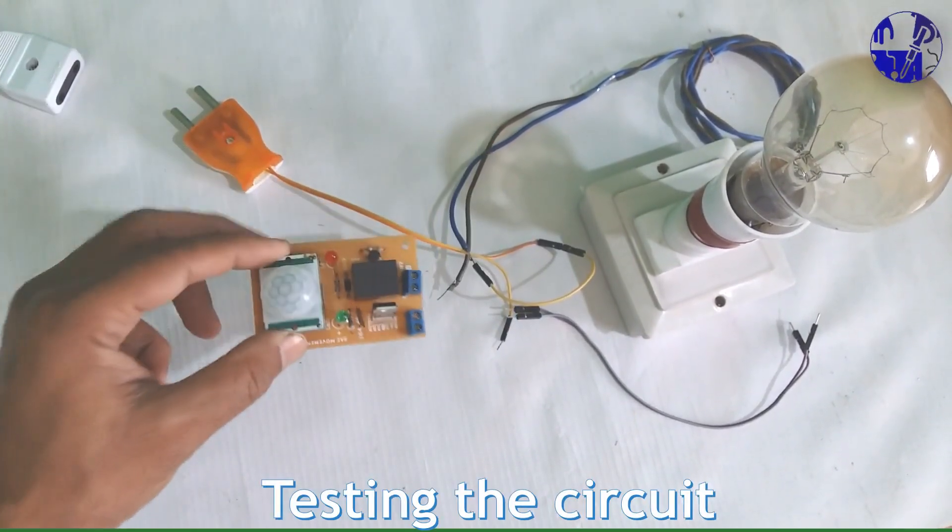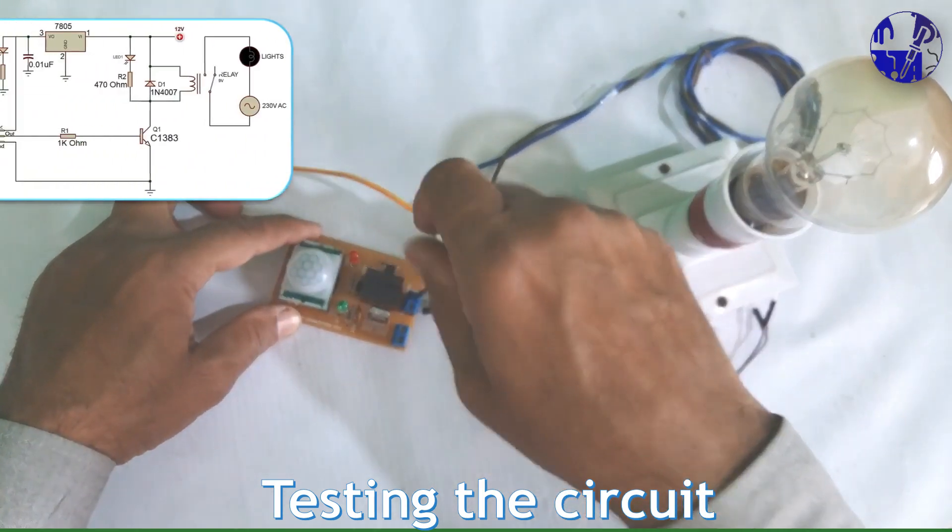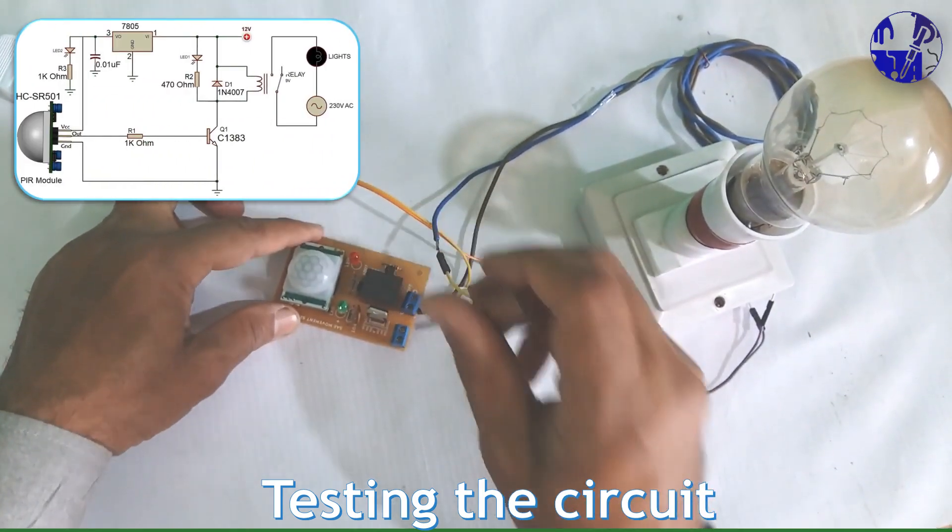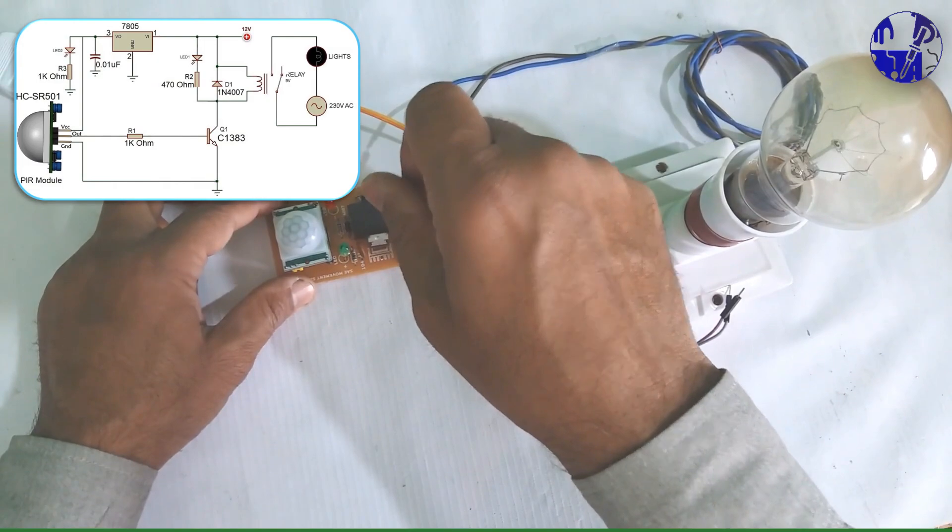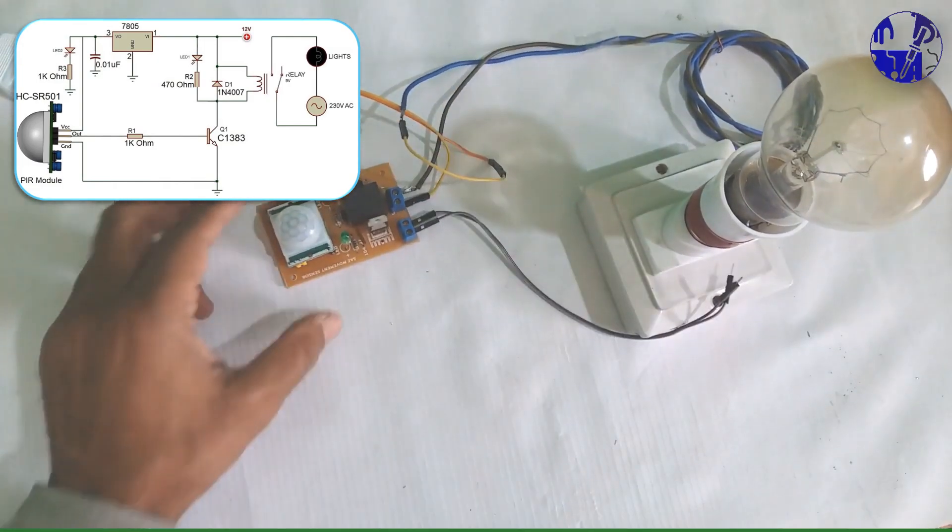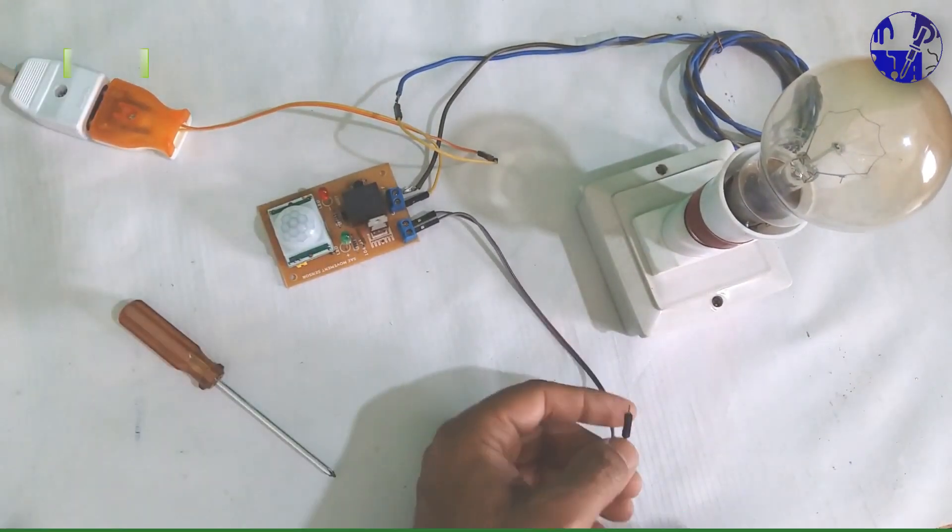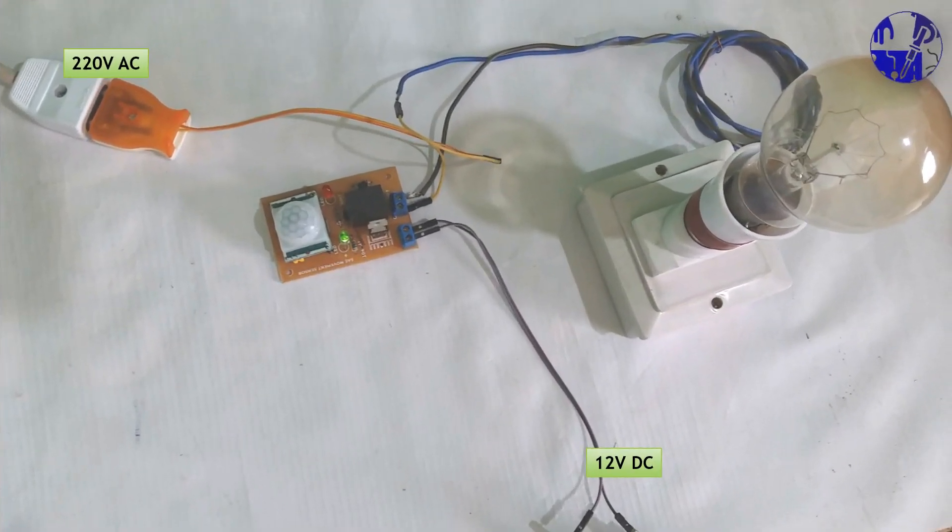Your PIR motion sensor light switch is now ready to operate. Connect the 12-volt power supply to the circuit and attach the light bulb to the relay contacts following the diagram. Alternatively, you can connect other security devices like alarms in place of the bulb.